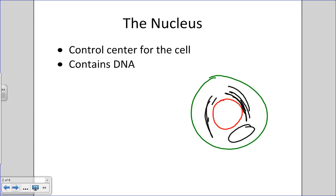We call it the control center for the cell because that's where you find DNA. In human cells, DNA is located within the nucleus. That's a big difference between eukaryotic complex animal cells versus prokaryotic simple cells like bacteria — storing DNA within the nucleus itself.